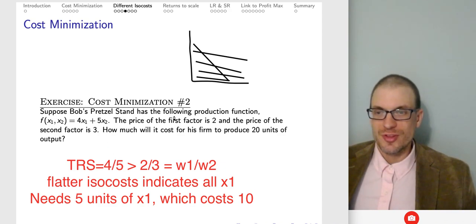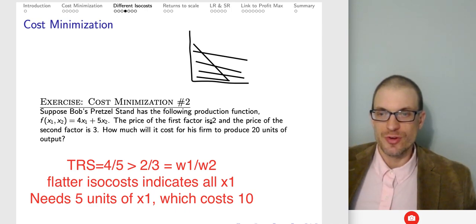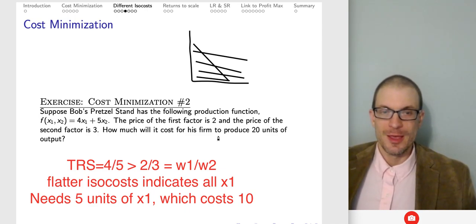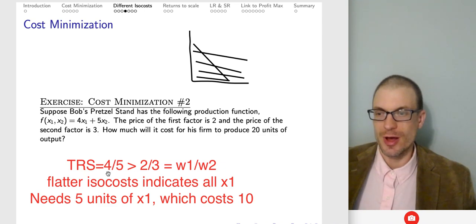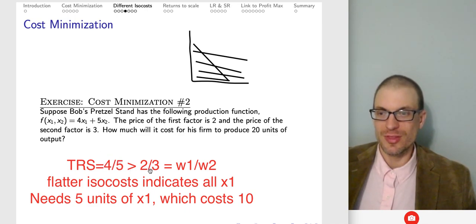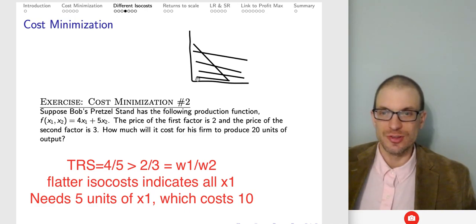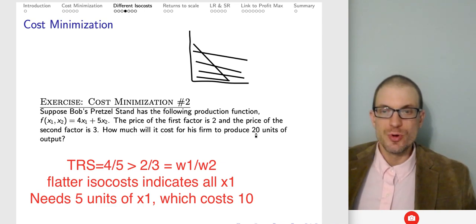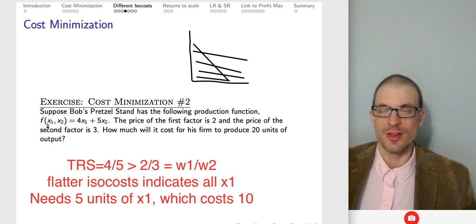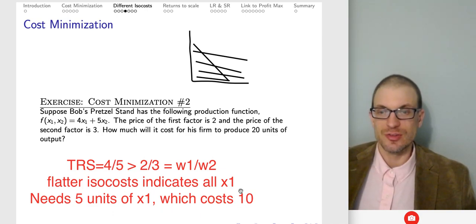Cost minimization example two: Bob's pretzel stand has production function 4X₁ + 5X₂ with ω₁ = 2, ω₂ = 3, producing 20 units. TRS = MP₁/MP₂ = 4/5 = 0.8. Ratio of factor prices = 2/3 ≈ 0.67. Since 0.8 > 0.67, the isocosts are flatter — this is an all-X₁ corner solution. To produce 20 units using only factor one: 4 × 5 = 20, so need 5 units. Cost = 2 × 5 = $10.